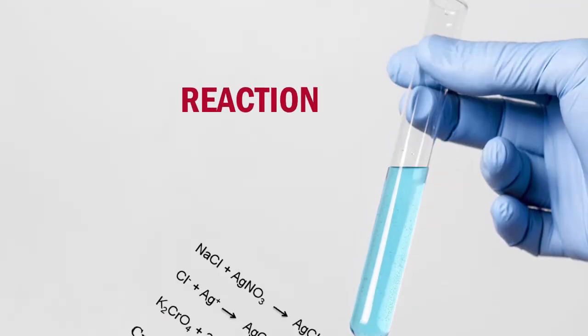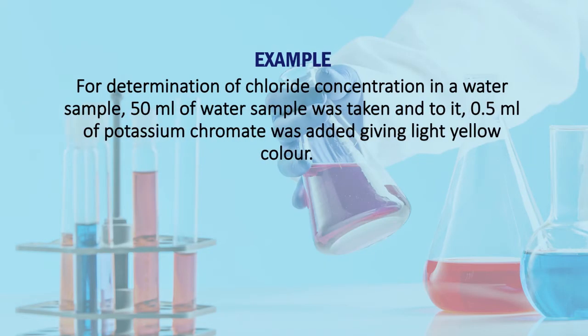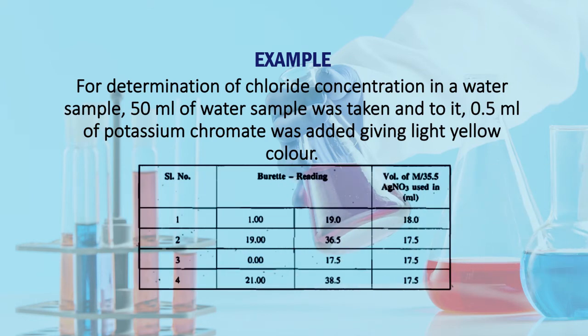Reactions: sodium chloride reacts with silver nitrate to form silver chloride and sodium nitrate. There is a white precipitation of silver chloride. Then potassium chromate reacts with the excess silver nitrate, and a reddish color precipitation of silver chromate is formed.